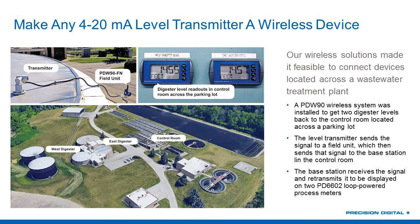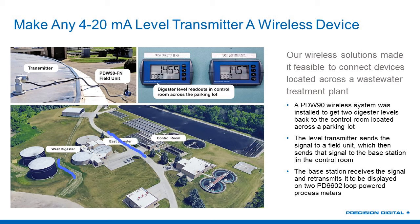I also want to touch on how we can help you connect up these systems using things like our wireless transmitters. In this example, you've got two digesters — a west digester and an east digester — that all want to send information back to the control room. As you can see, you've got all kinds of roadways that you really don't want to trench, and even if you did, it's going to be extremely costly. So to add new transmitters, they put their transmitters up at the top of the vessels and connected to our PDW-90 field unit.